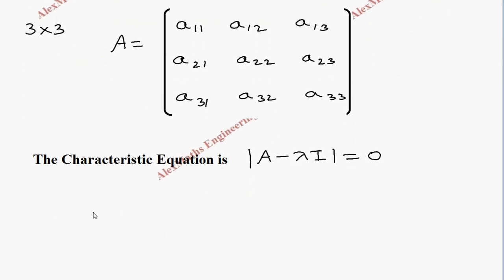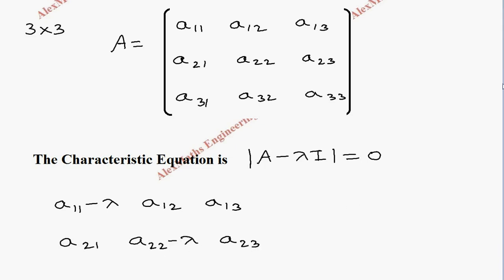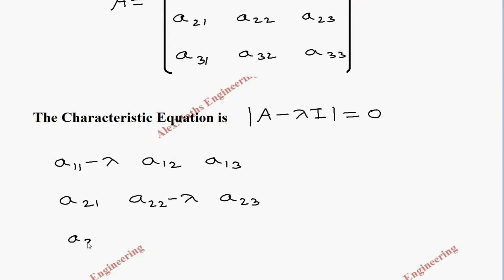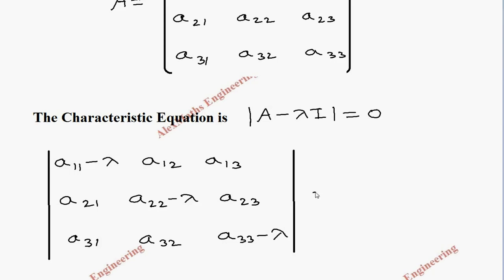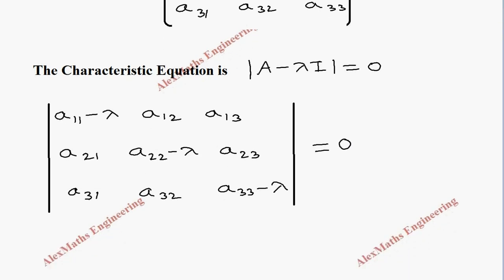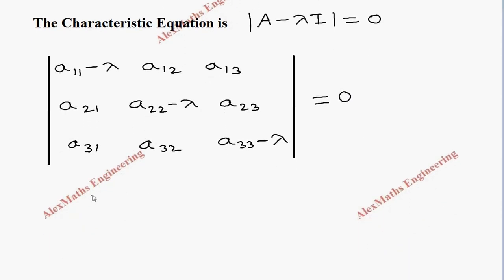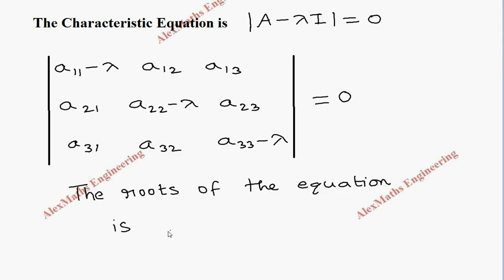When we write the determinant value, it is a11 minus lambda, then a12, then a13, and a21, then a22 minus lambda, then a23, then a31, a32, then the last element is a33 minus lambda. On solving this determinant equal to 0, we get the eigenvalues. The roots of this equation are eigenvalues; let them be lambda 1, lambda 2, and lambda 3.